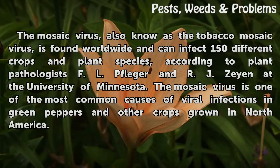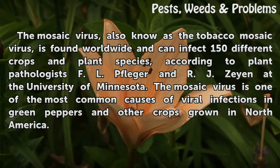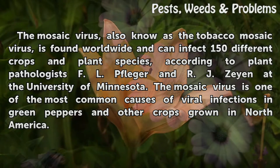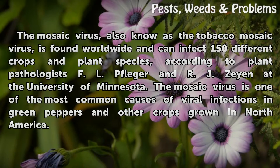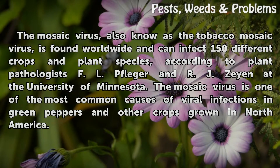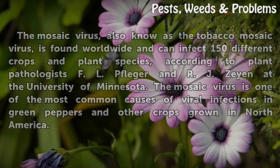The mosaic virus, also known as the tobacco mosaic virus, is found worldwide and can infect 150 different crops and plant species, according to plant pathologists Flieger and R.J. Zain at the University of Minnesota. The mosaic virus is one of the most common causes of viral infections in green peppers and other crops grown in North America.